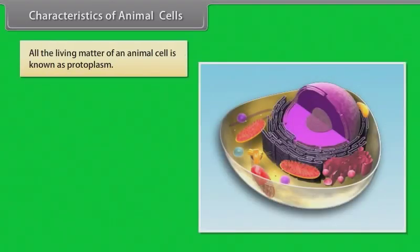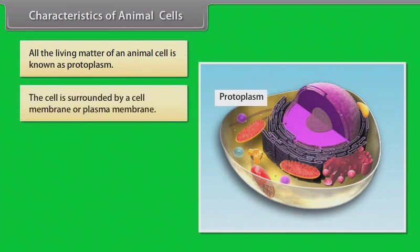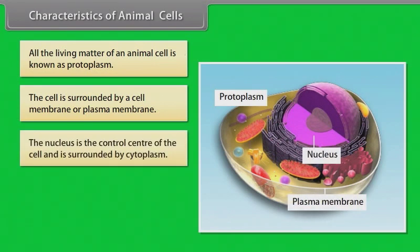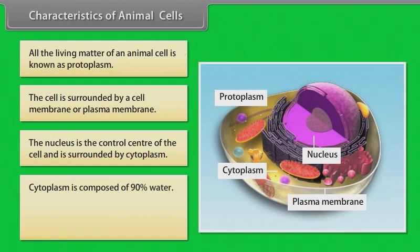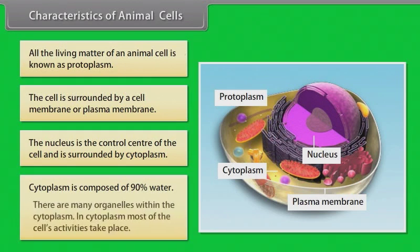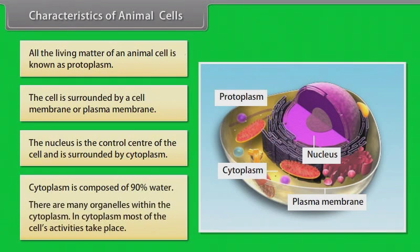All the living matter of an animal cell is known as protoplasm. The cell is surrounded by a cell membrane or plasma membrane. The nucleus is the control center of the cell and is surrounded by cytoplasm. Cytoplasm is composed of 90% water, and there are many organelles within the cytoplasm. In cytoplasm, most of the cell's activities take place.